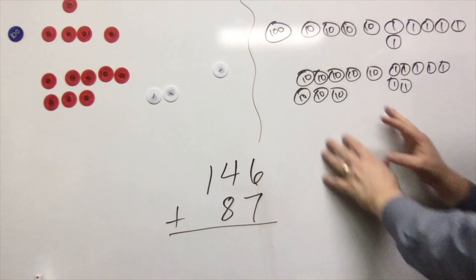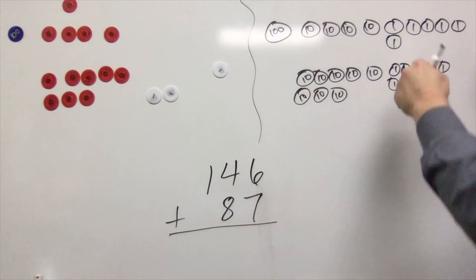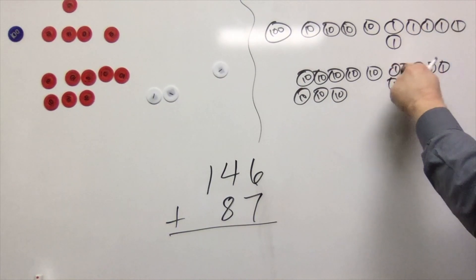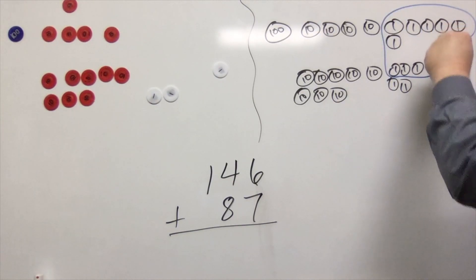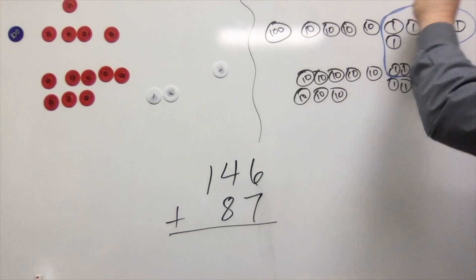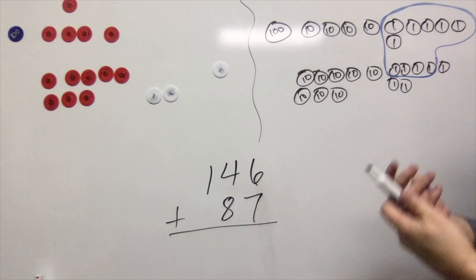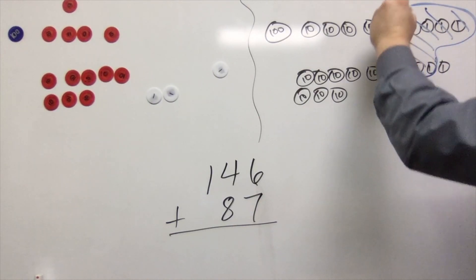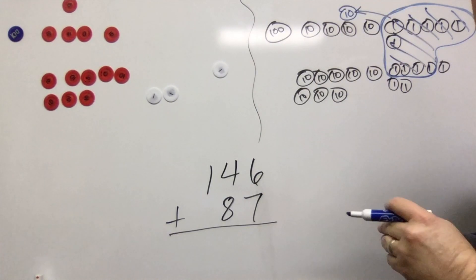So what is that going to look like over here in our pictorial? Well, one way we can record this is by circling ten ones — one, two, three, four, five, six, seven, eight, nine, ten. We can circle these 10 ones, cross those off nicely, and indicate a brand new ten right there.